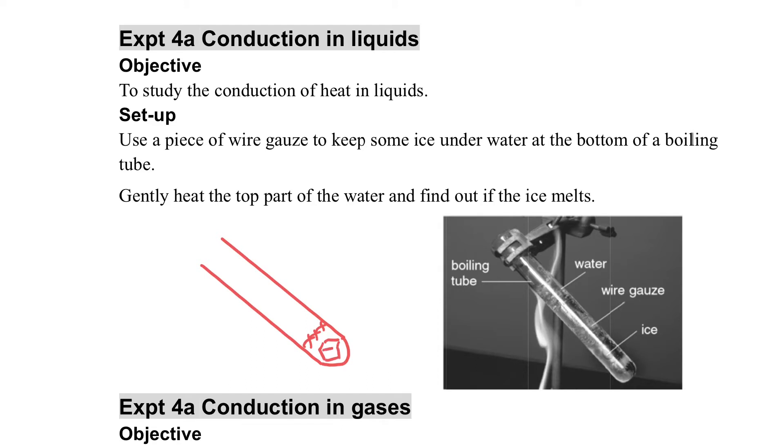Now we will heat up the water at the top of the boiling tube to see whether the ice will melt. And we will found that a very interesting phenomenon. The ice won't melt, but the water on the top boils to show how weak the heat conduct of the liquid.